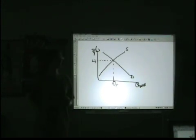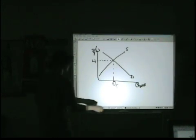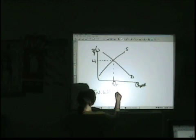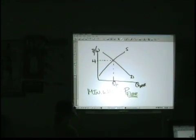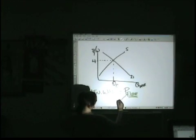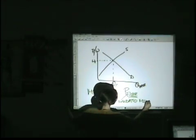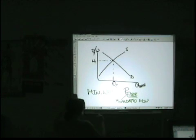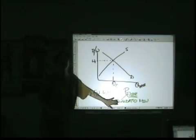When the government mandates a minimum wage, what it actually does is put in a price floor. Remember that a price floor is a mandated minimum, such that it is illegal for a firm to pay lower than the mandated minimum.